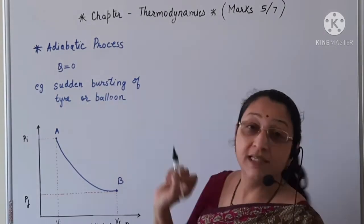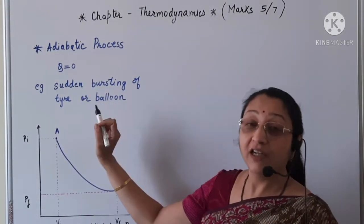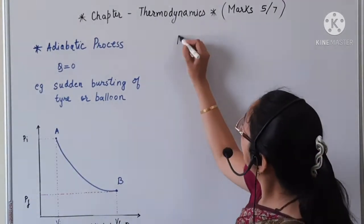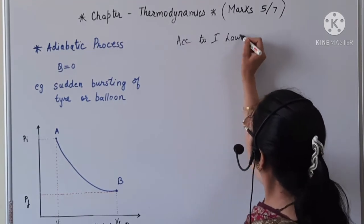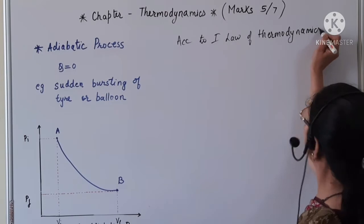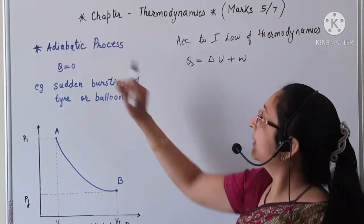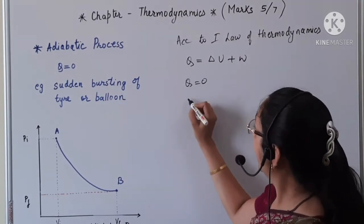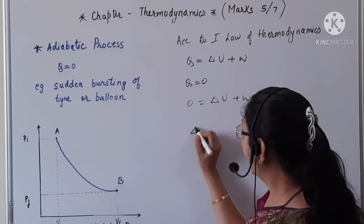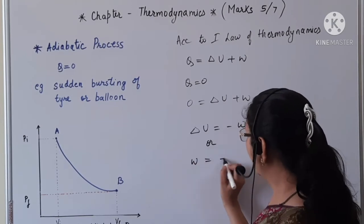Hence Q is equal to zero. An example of the adiabatic process is the sudden bursting of a tyre or a balloon. Now, according to the first law of thermodynamics, Q is equal to ΔU plus W. In the adiabatic process, Q equals zero, hence 0 = ΔU + W, so we can write ΔU = −W, or W = −ΔU.